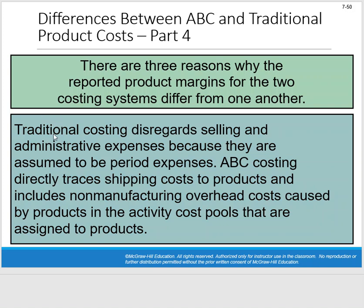And then finally, a third reason: traditional costing disregards selling and admin expenses because they are assumed to be period expenses. ABC takes a different look at that — it directly traces shipping costs to products and potentially includes some non-manufacturing overhead costs caused by products. So again, it's focused heavily on cause and effect, constantly asking what is causing costs to happen. ABC takes a totally different approach than traditional product costing.